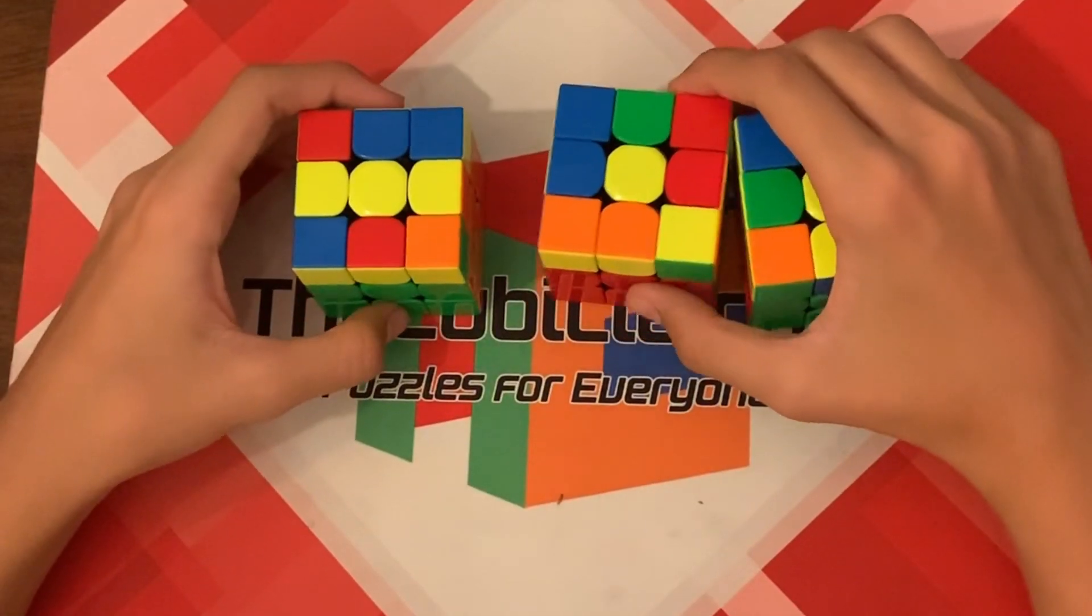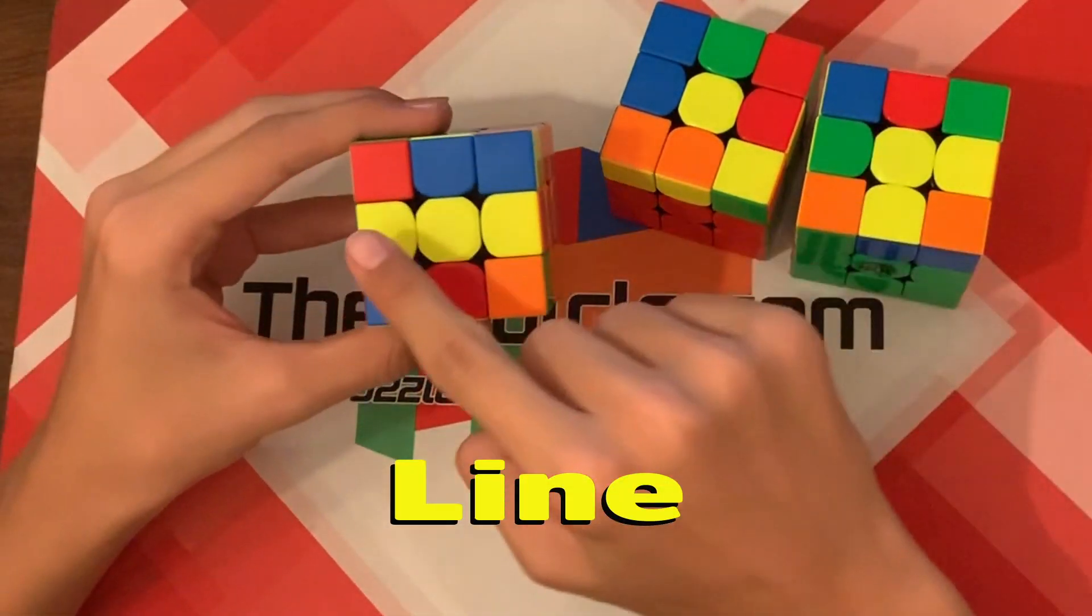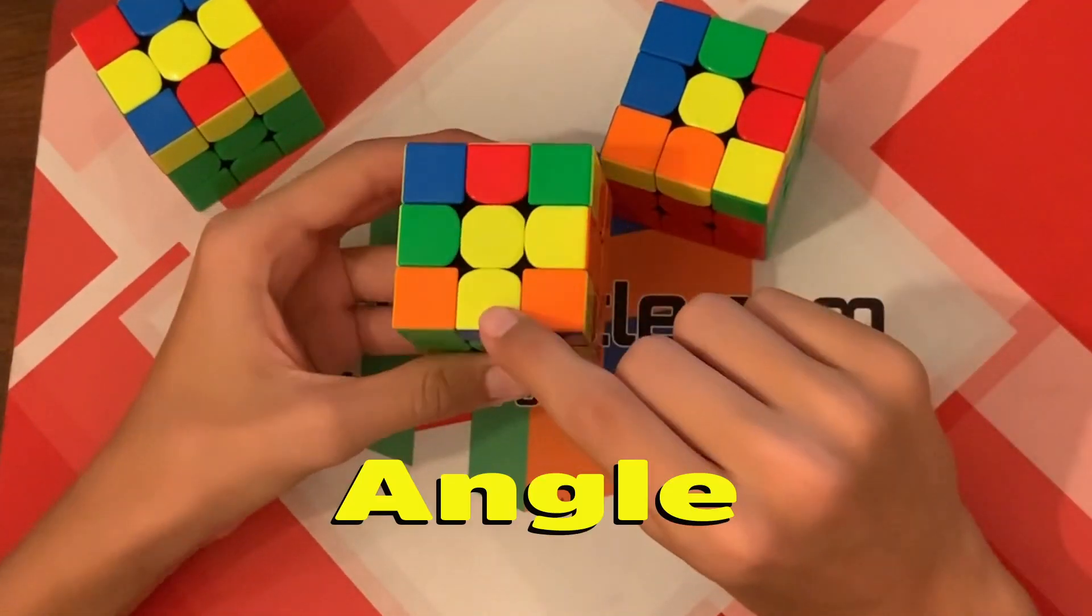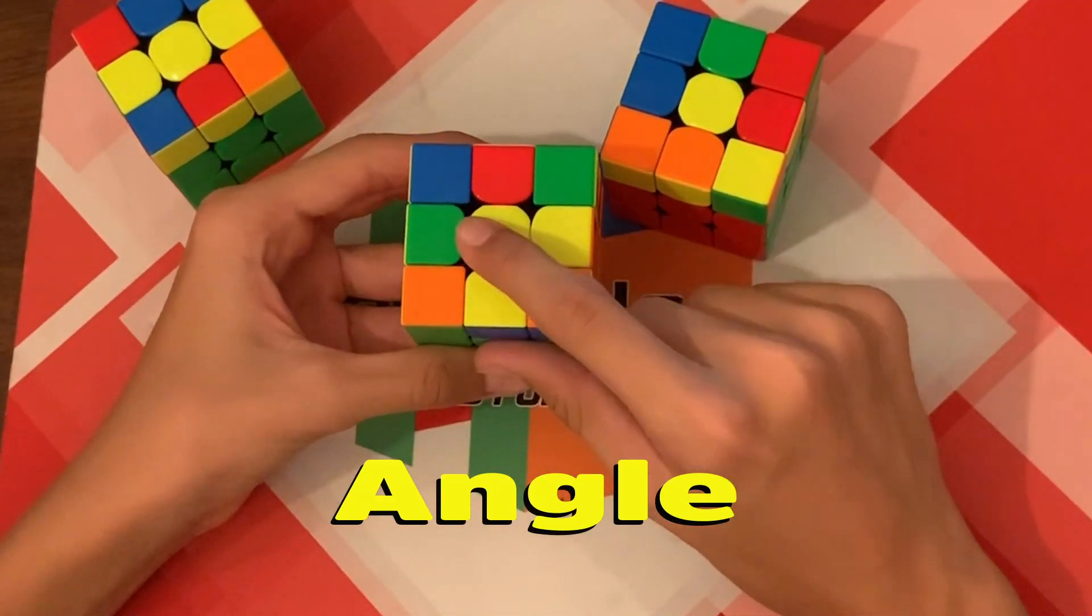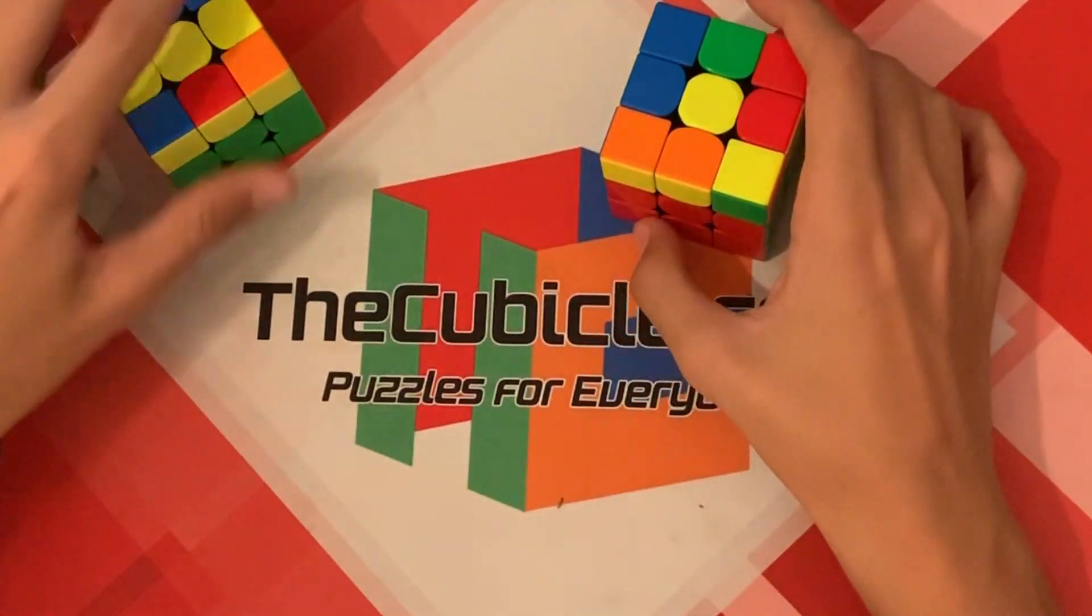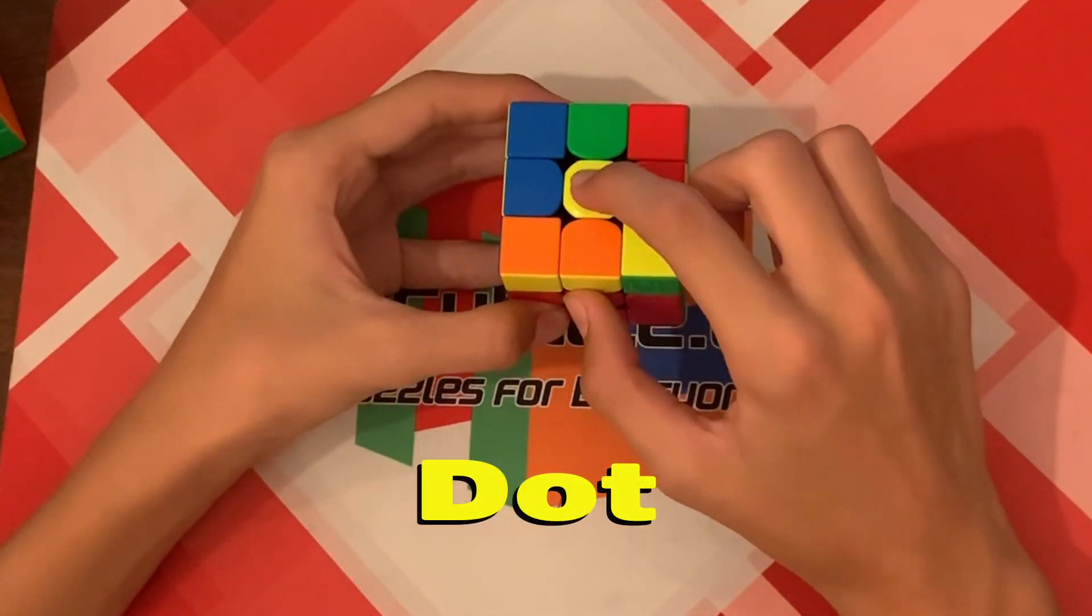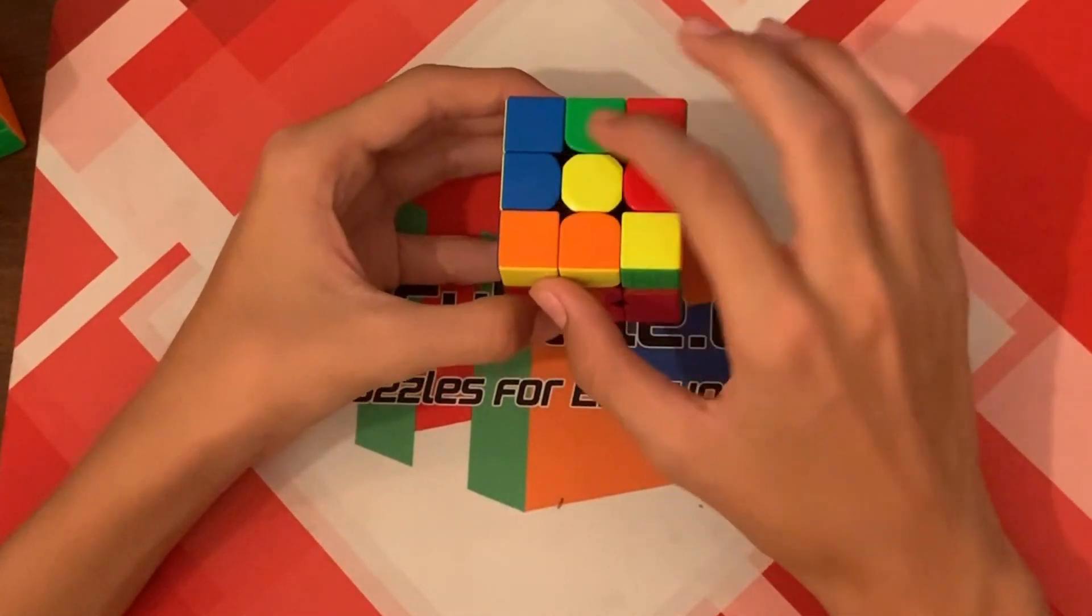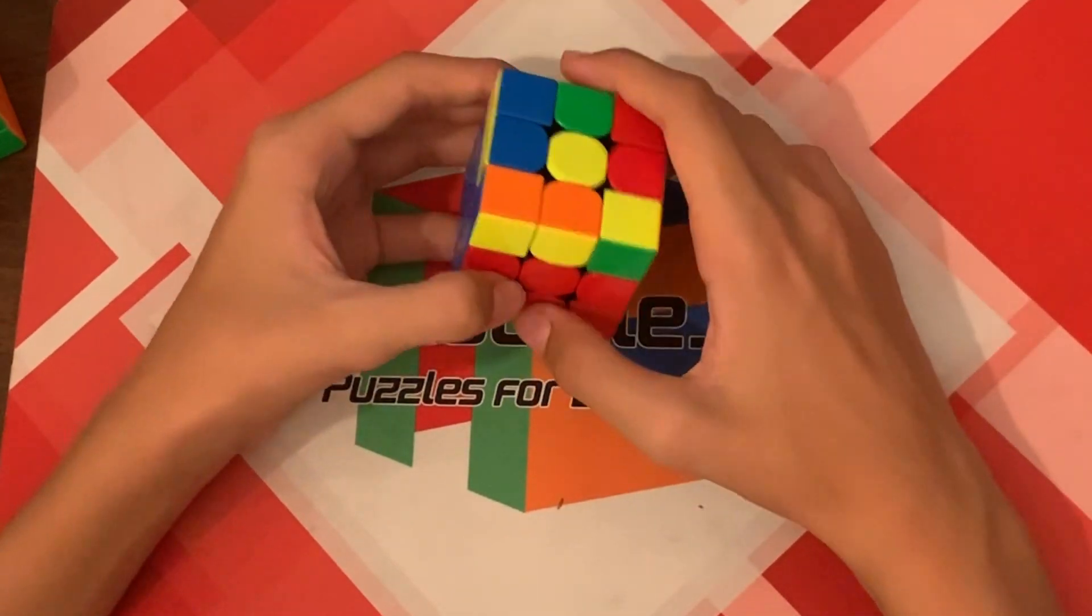Next, just look at the yellow face, and you could have one of three scenarios. You could have a line, which looks like this, an angle, which looks like this, or a dot, which looks like this. It's no edges solved, it's just the yellow center. So let's start with this one.